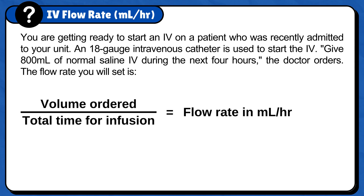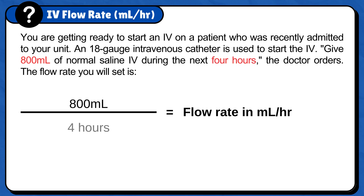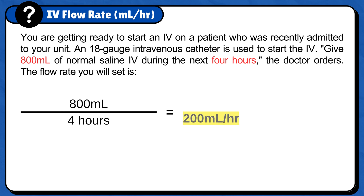Now plug the numbers into the formula. Volume ordered is 800 milliliters. Total time for infusion is 4 hours. Since everything is in the correct unit, no conversions are needed. Calculating: 800 milliliters divided by 4 hours is 200 milliliters per hour. Therefore, 200 milliliters per hour will be the flow rate.